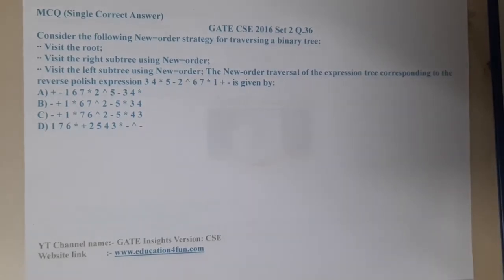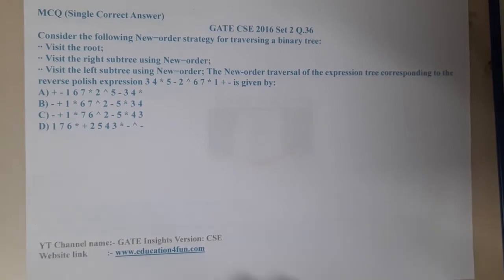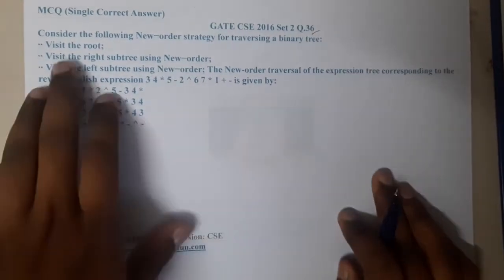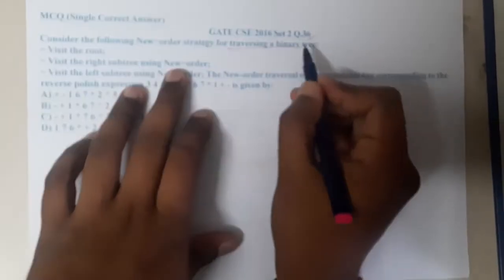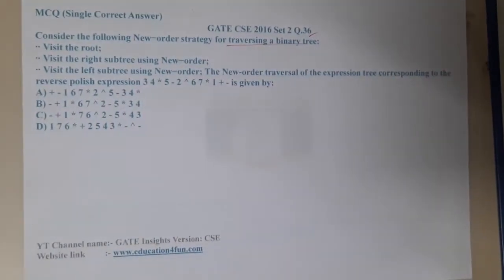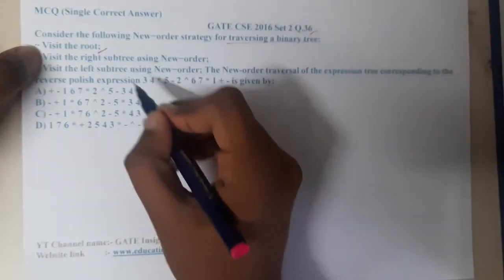Hello guys, we are back with our next lecture. In this lecture, let us go through the next question that is GATE CSE 2016 Set 2 Question 36. Consider the following new order strategy for traversal in a binary tree. So they are creating a new traversal.